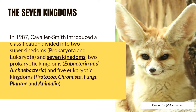In his Seven Kingdoms system, two of those kingdoms are prokaryotic — domain bacteria, the true bacteria or eubacteria, and domain archaea, which includes archaebacteria.